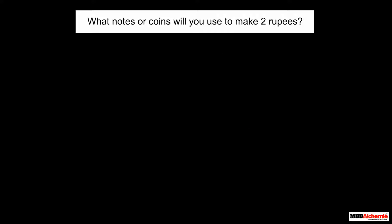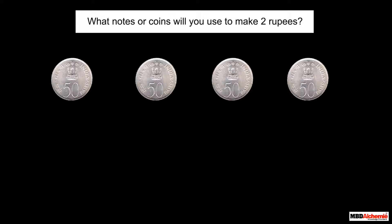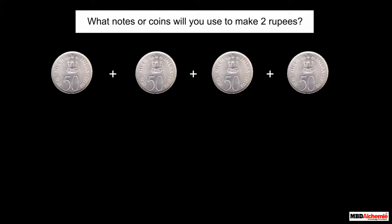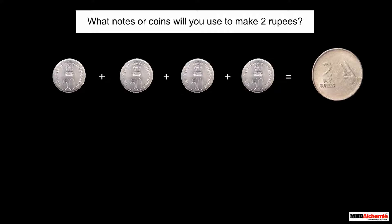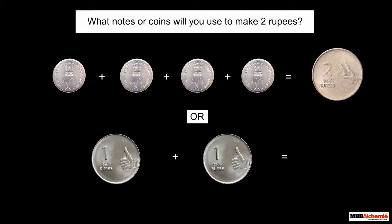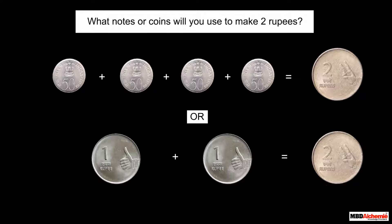What notes or coins will you use to make 2 rupees? 4 fifty-paise coins make 2 rupees. Or, 2 one-rupee coins or notes make 2 rupees.